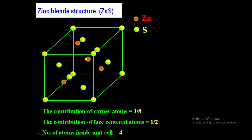Zn²⁺ ions are present along the diagonal inside the unit cell, so they are not shared with other unit cells. Therefore, the number of Zn²⁺ ions inside the unit cell is 4.